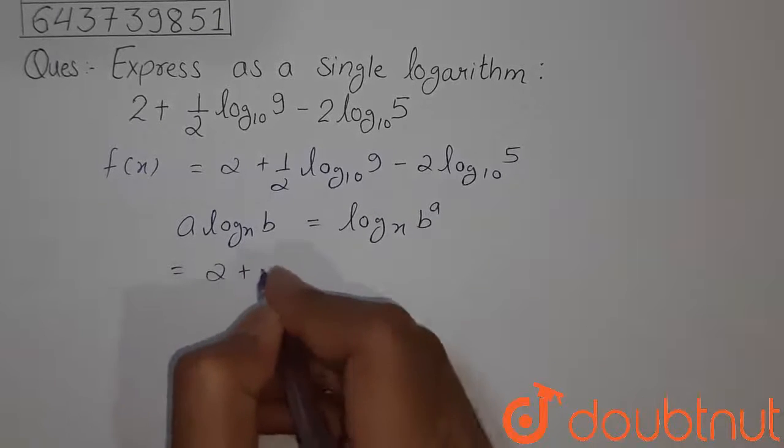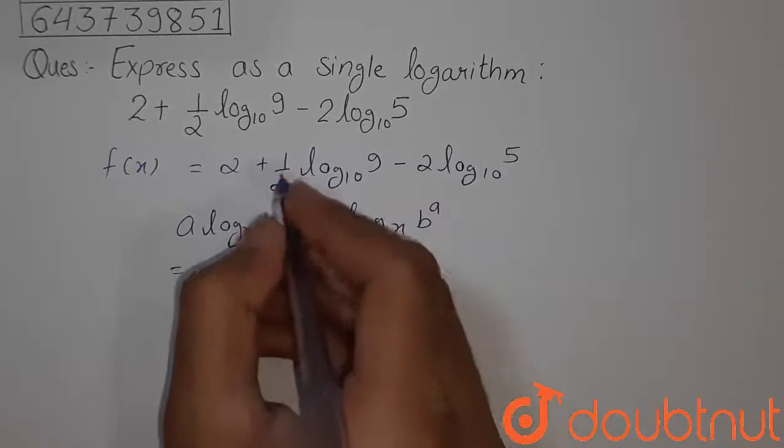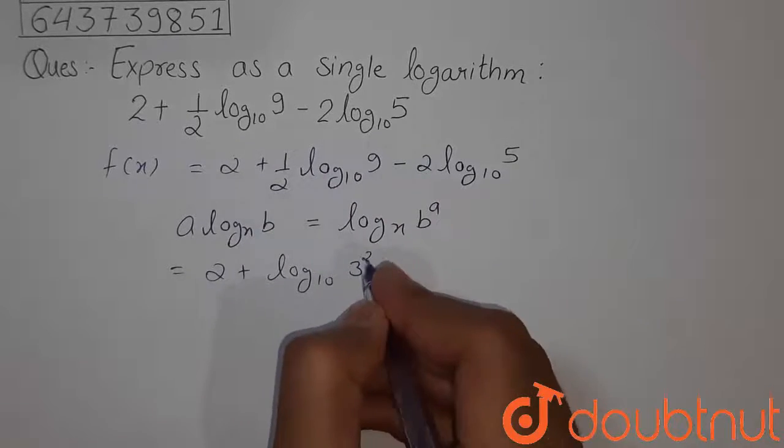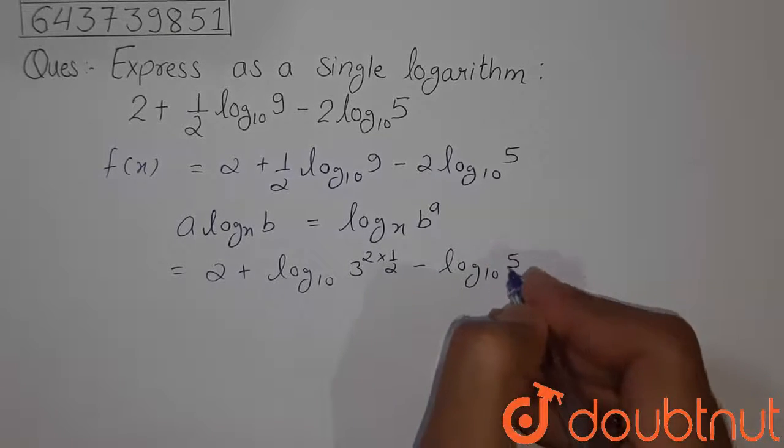So 2 plus log to the base 10, since 9 can be written as 3 square. So when this power comes here, it will be 2 into 1 by 2. So 2 minus log to the base 10, 5 square.